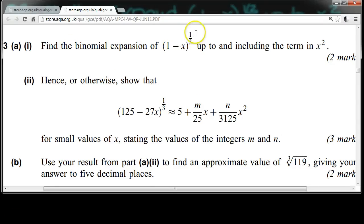Find the binomial expansion of 1 minus x to the power 1/2, up to and including the term in x squared. Hence or otherwise, show that 125 minus 27x all to the power 1/2 is approximately equal to 5 plus m over 25x plus n over 3125x squared. For small values of x, stating the values of the integers m and n. Use your result from part A2 to find an approximate value of the cube root of 119, giving your answer to 5 decimal places.